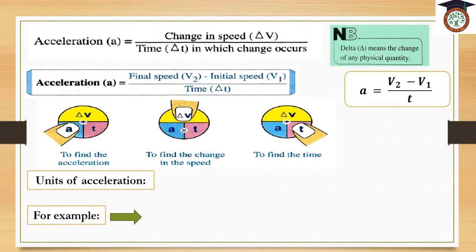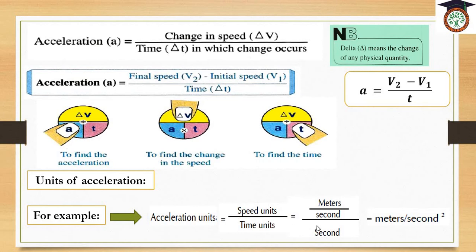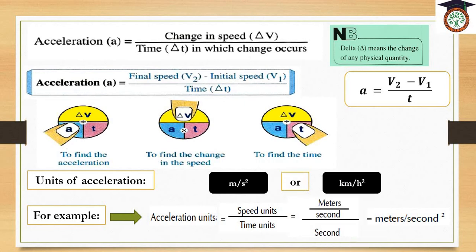Units of acceleration. We can get the unit of acceleration by using the rule — we put the speed units divided by time units. If the speed is measured in meters per second and the time in seconds, the unit of acceleration will be meter per second squared. The other unit is kilometer per hour squared, when speed is measured in kilometers per hour and time in hours.